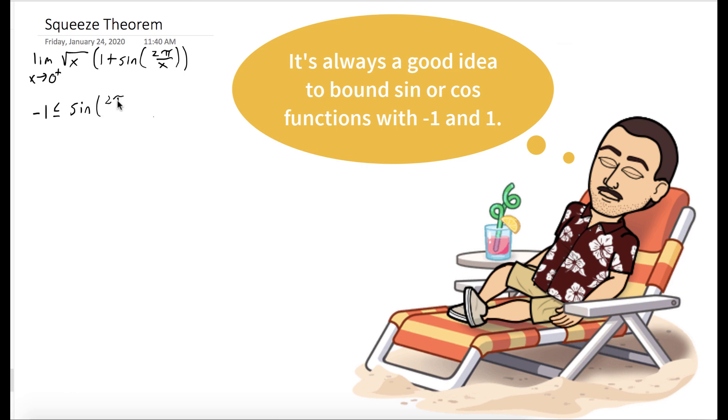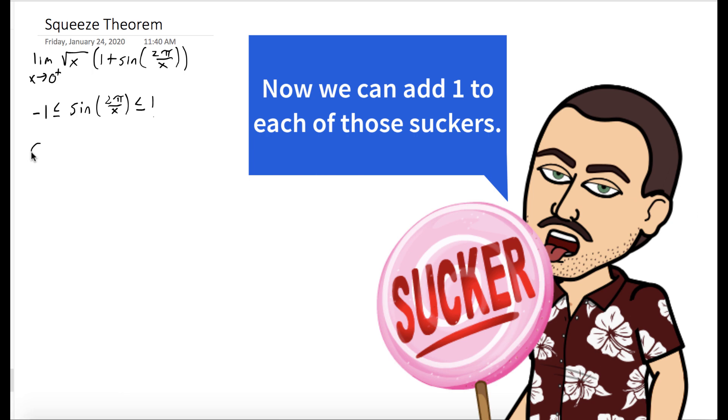We'll start by bounding sine of 2π over x by negative 1 and 1. Sine of anything is at most 1 and at least negative 1. We could add 1 to each term in this inequality.